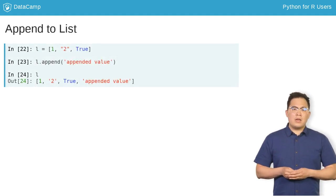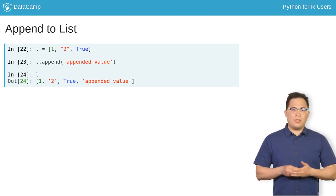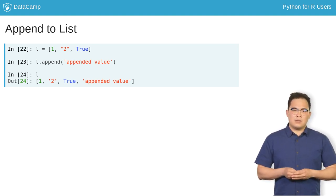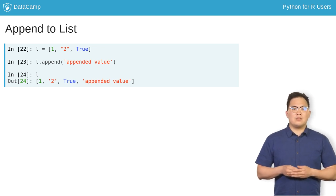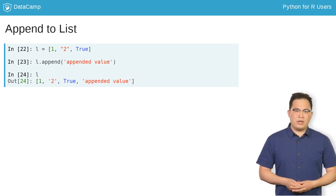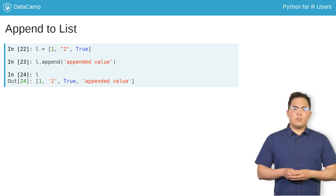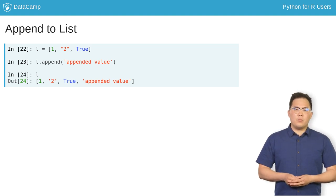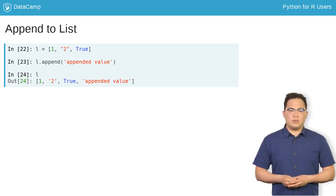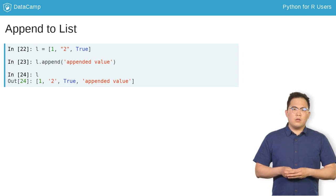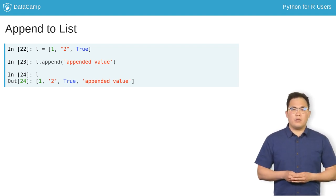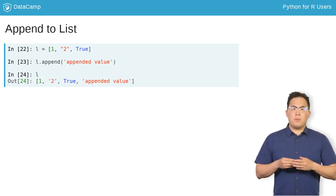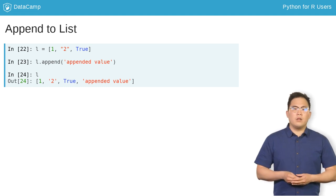In Python, you can add elements to a list using the append method. Note the syntax: you call the append method on the list l using the dot notation. Inside the parentheses, you pass the element to be added to the list. Note that you are not passing the list l to append — rather, you are calling append on the list l.